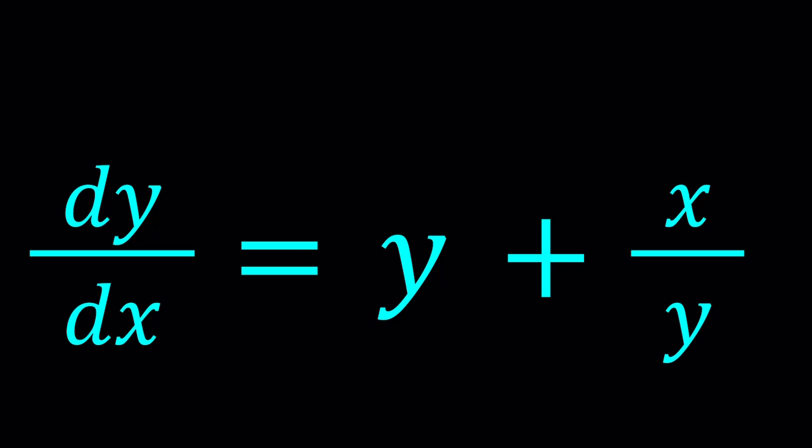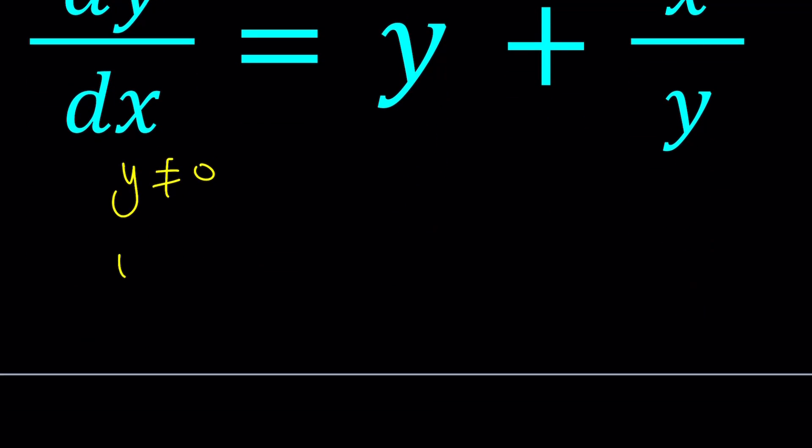We have dy over dx, which can be written as y prime. But first, notice that y cannot be zero. So at the end, when we get the y values, we have to make sure that y does not equal zero. Under those conditions, multiply both sides by y. And you're going to get y times dy over dx, which I can write as y prime equals y squared plus x.